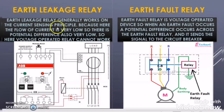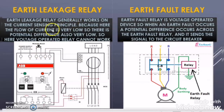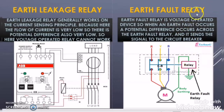The earth leakage relay is a current-operated device. Since it deals with very minute current, it senses a very small current difference in the phases and trips the circuit using that current imbalance. But in the earth fault relay, there is a huge current flowing during the fault, so the voltage induced in the tripping coil is very high. Therefore the earth fault relay uses a voltage-induced technique to trip the circuit — it is basically a voltage-operated device.